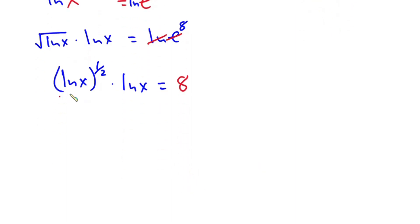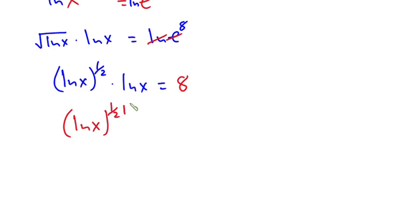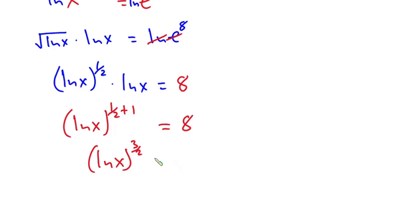On the left hand side, we have the same base multiplying, so we can add the powers. We have natural log of x to the power one half plus one, and this is equal to 8. Now one half plus one is the same as three over two, so we have ln(x) to the power three over two equals 8.